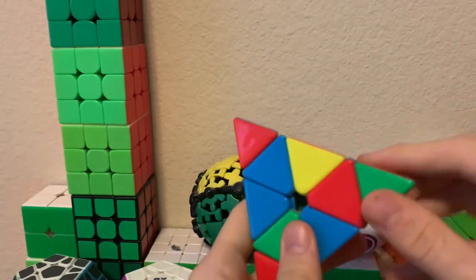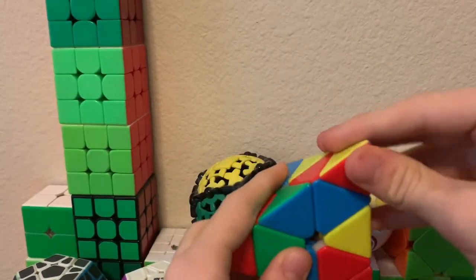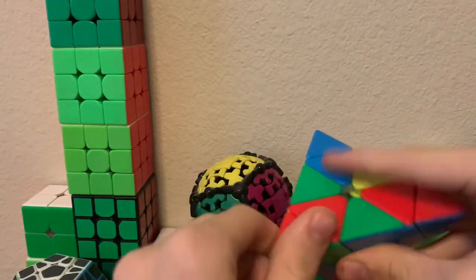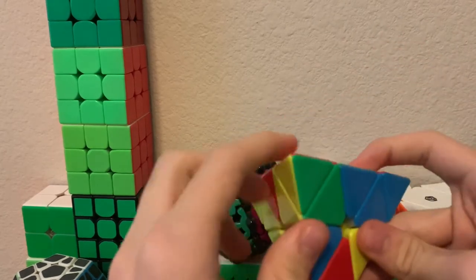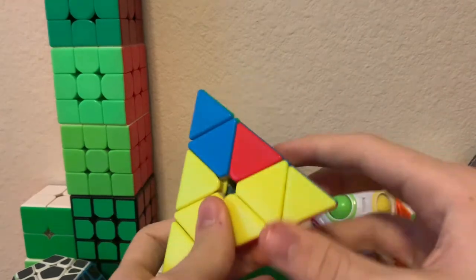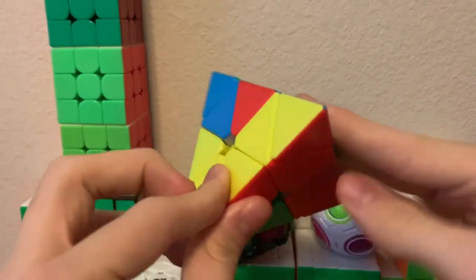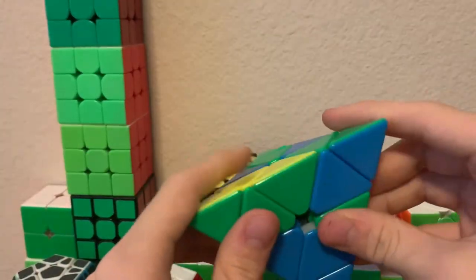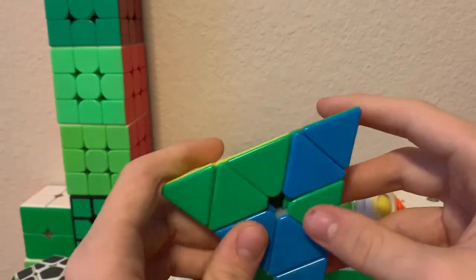As always the first thing we do is to solve the tips. Next we put in the bar, the backbone, and we can now check whether each edge is oriented or not.